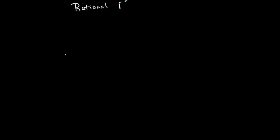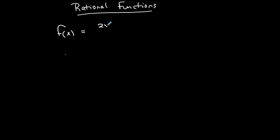This video talks about rational functions. If you think about rational numbers, they're numbers that can be represented as fractions, so an example of a rational function is basically a fraction with polynomials on the top and on the bottom. That's what it looks like — this is an example of a rational function.